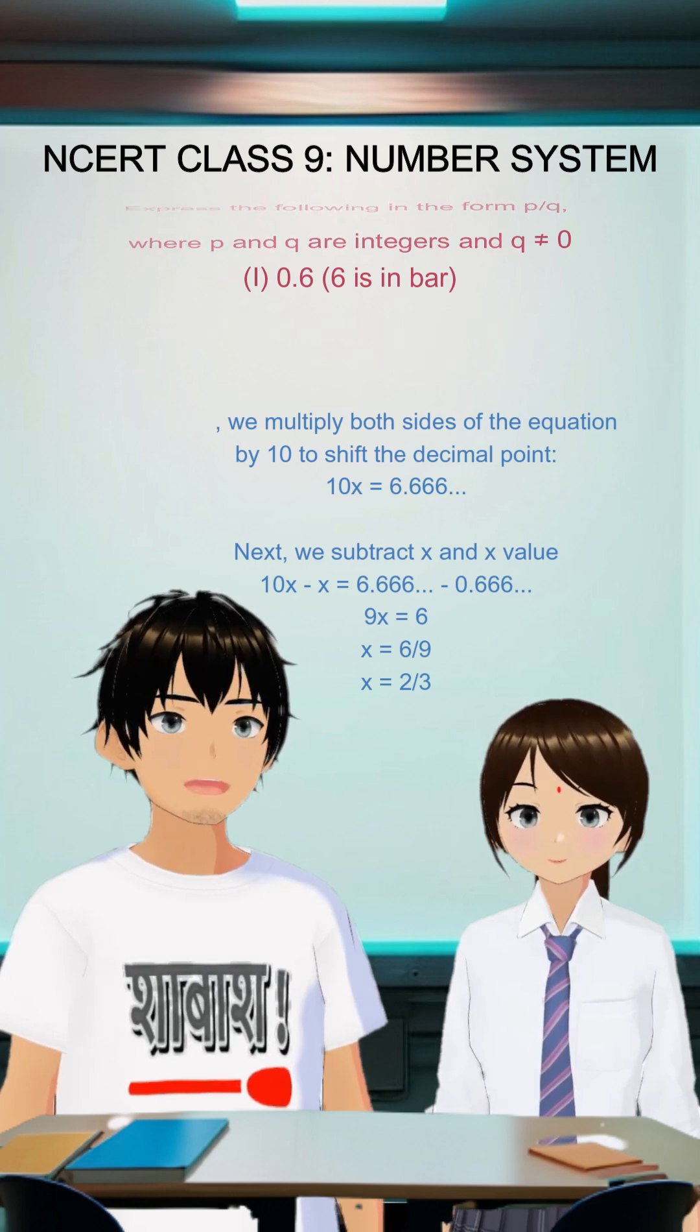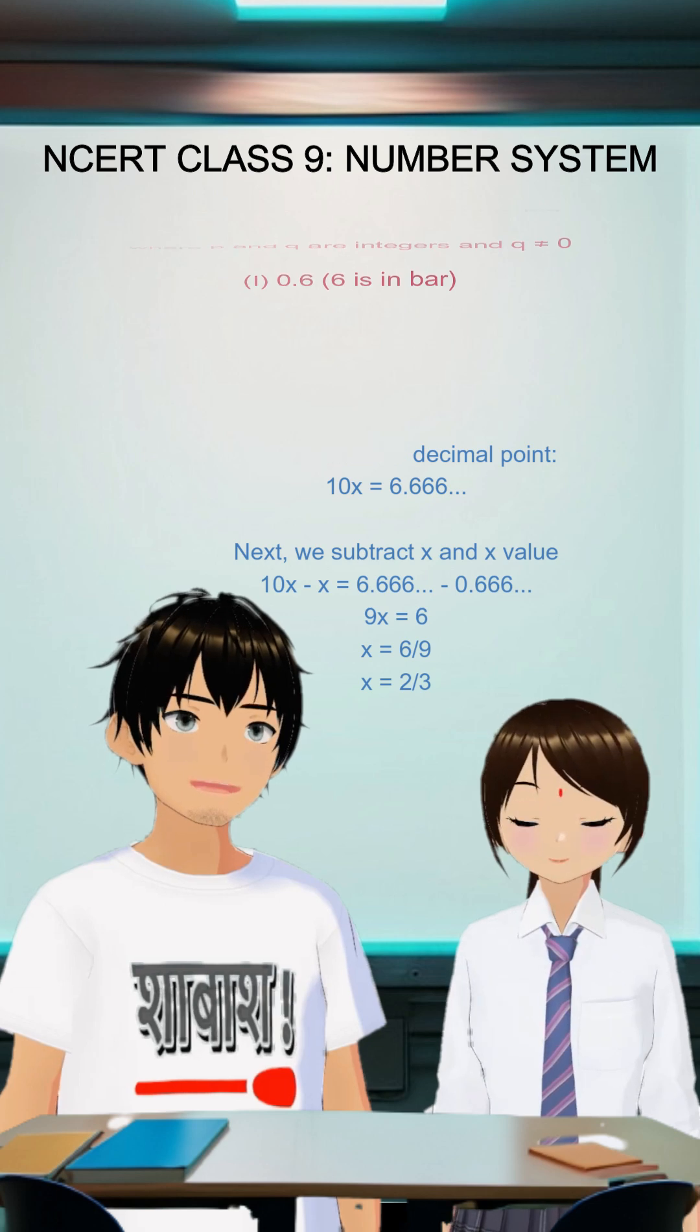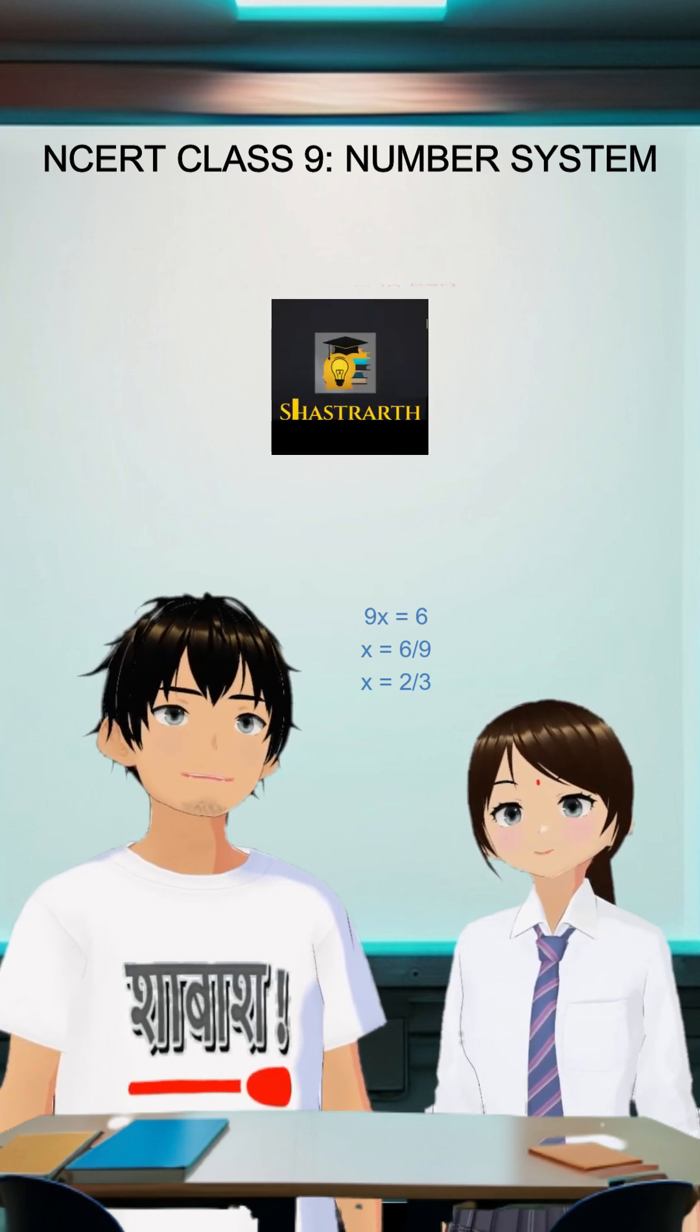Therefore, the decimal number 0.6 with the recurring bar over the 6 can be expressed as the fraction 2 thirds.